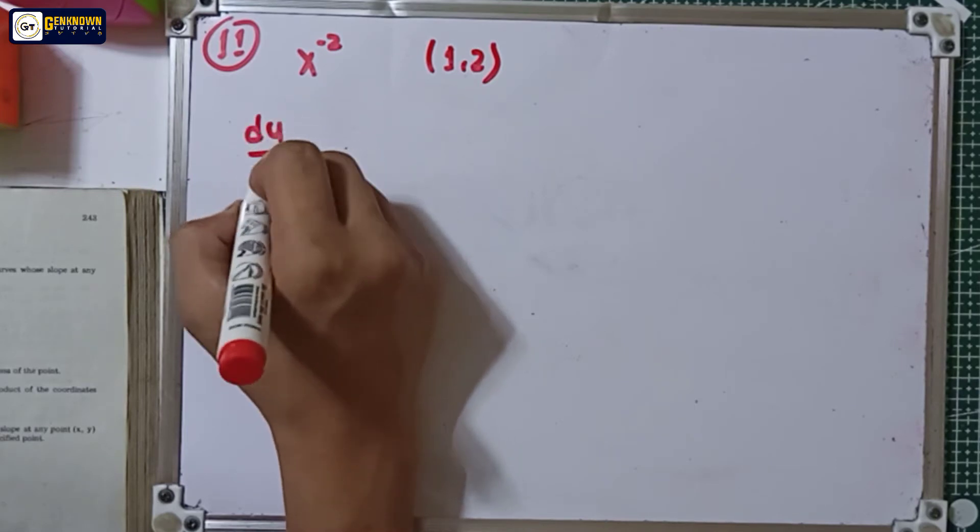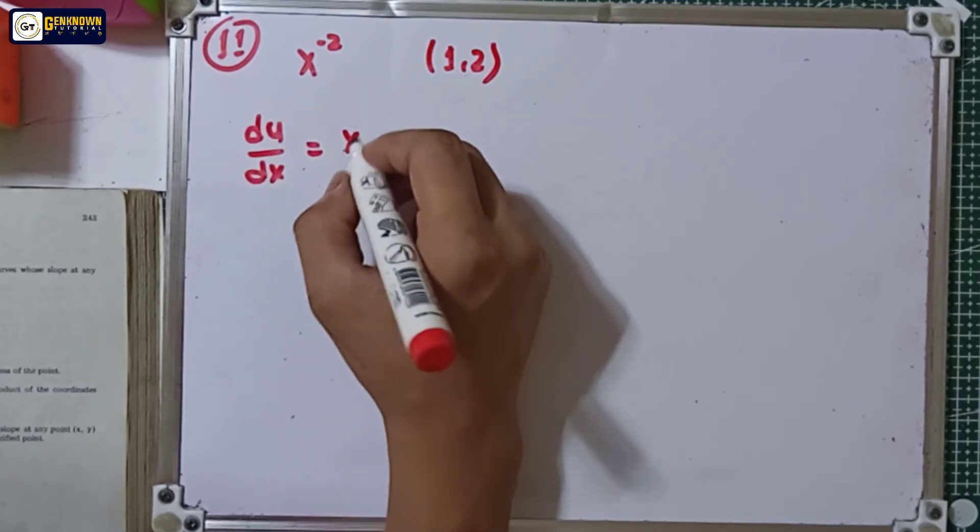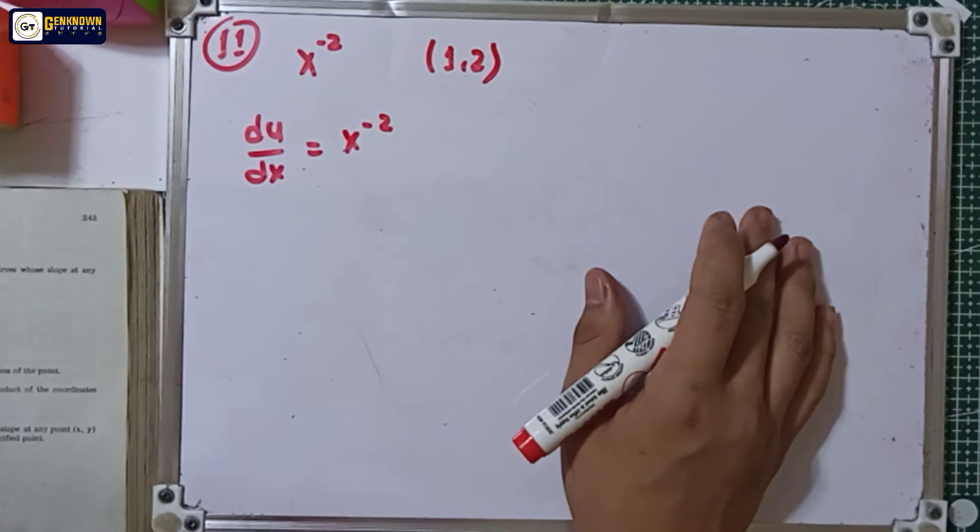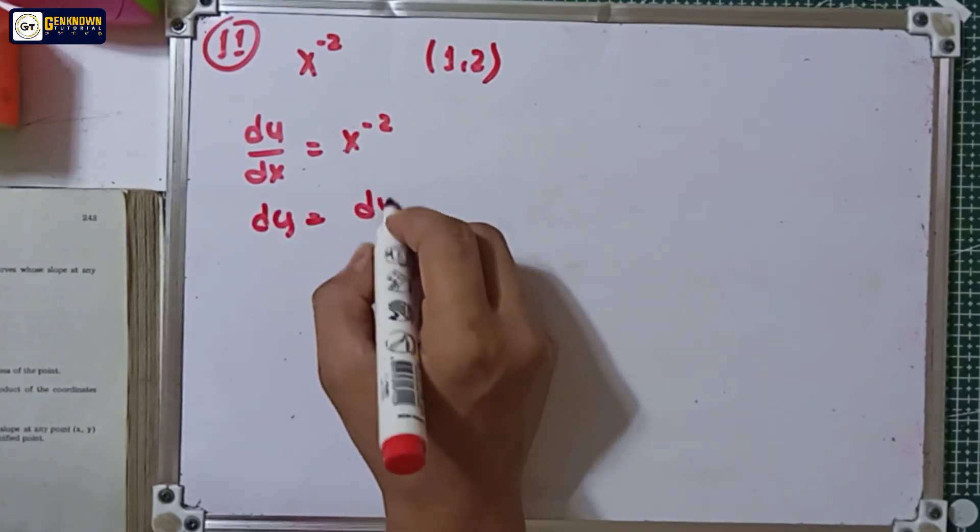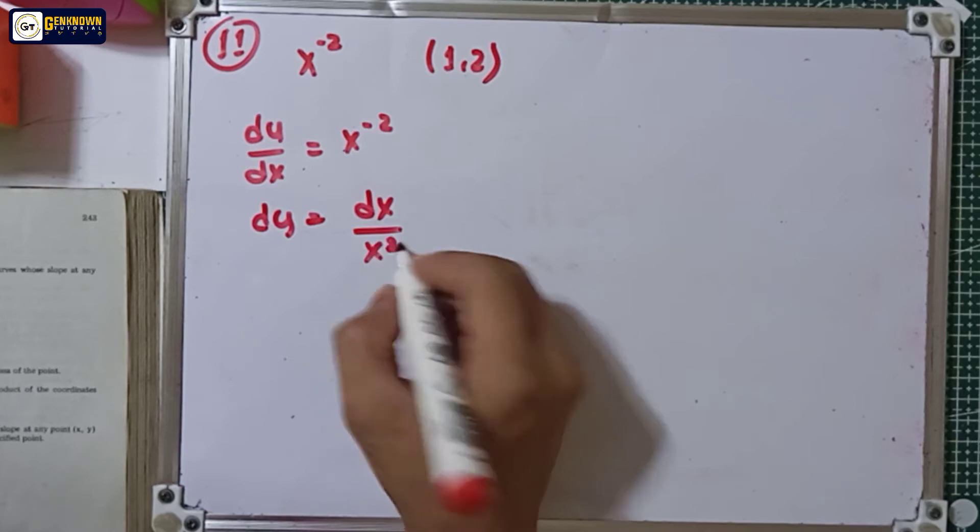So the slope dy over dx is equal to x raised to negative 2. So as separation of variables, we have dy is equal to dx over x raised to 2.